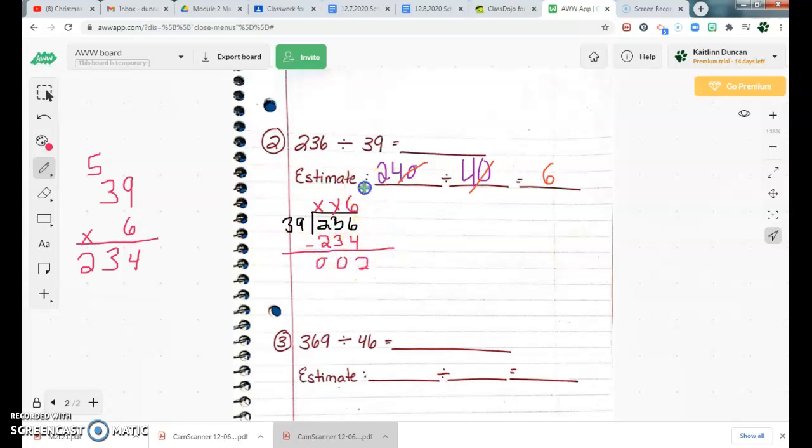So then my answer, my quotient, is going to be 6 remainder 2, which is awfully close to my original estimation. Again, that's why we estimate. Now I'm not done yet, though. I need to check my work. To check it, I need to multiply my divisor by my quotient, add my remainder. Well, 39 times 6, I already did that over here. I don't need to do it again. That's 234, but I need to add 2 to it because I need to add that remainder. So 234 plus 2, I'm going to get 4 plus 2 is 6. 3, 2, that is my original dividend, so that means my answer is correct.